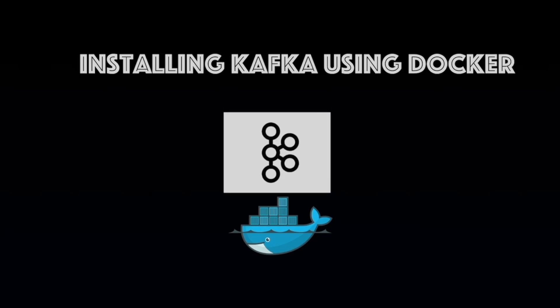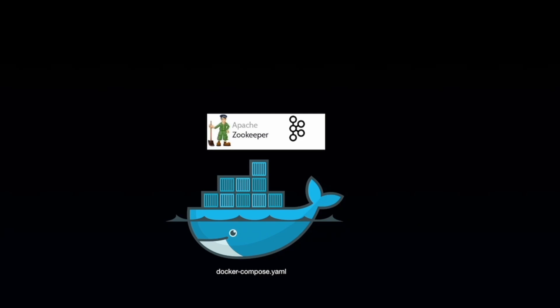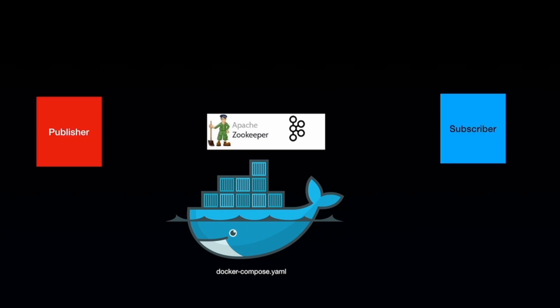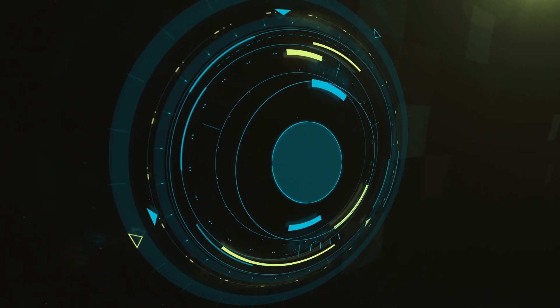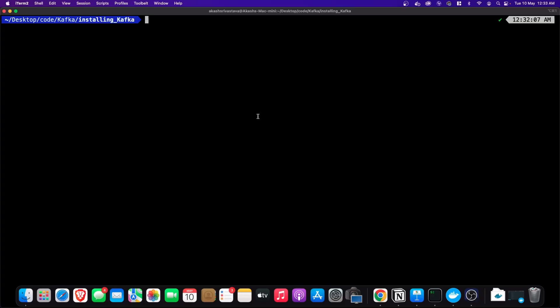Hello everyone, welcome to Developers Checkpoint. In this video we are going to install Kafka using Docker. We are going to create a Docker Compose file and run two services: one is Zookeeper and the other is Kafka. We will create a producer and subscriber, and see a demo by pushing messages from the publisher to Kafka and consuming the messages from the subscriber.